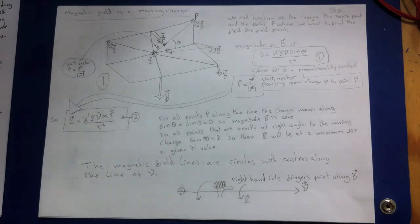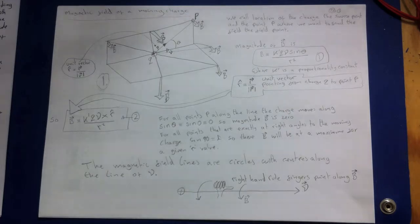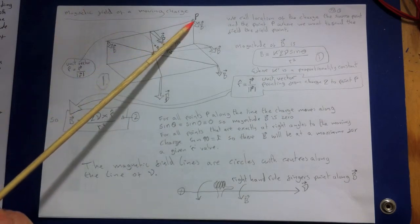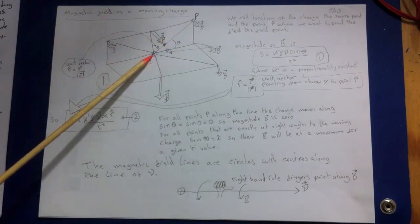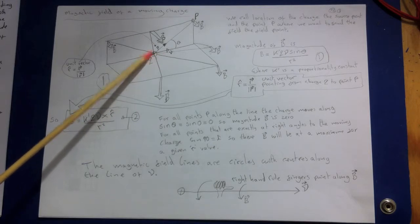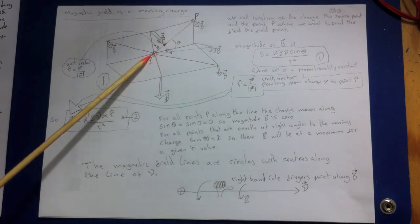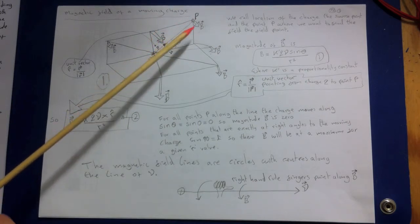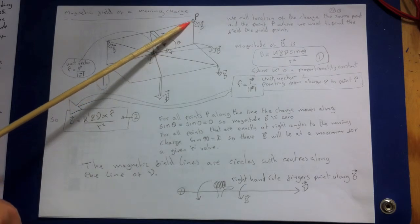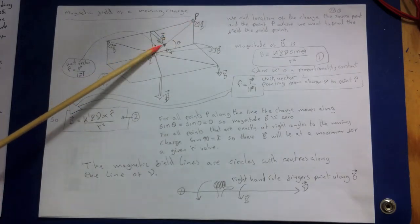Instead, it is perpendicular to the plane containing this line and the particle's velocity vector V, as shown in the diagram. We have the field point P and the source Q, and the force is not directed from Q to the field point P as it is in the electric field vector — in this case it points at right angles to this line.